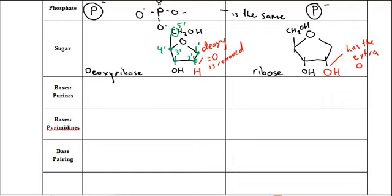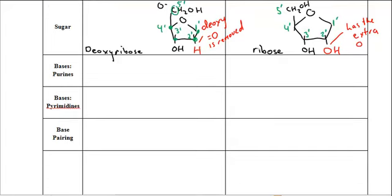And again, we number them the same way. If you're wondering what the prime is about, all sugars start out as a straight chain, and then they fold up into their pentose shape here. And when they're straight, we call that carbon 1, 2, 3, 4, and 5. And as soon as they fold up into the ring structure, we add a little prime after the number. So that's all that means. Prime just looks like an apostrophe.